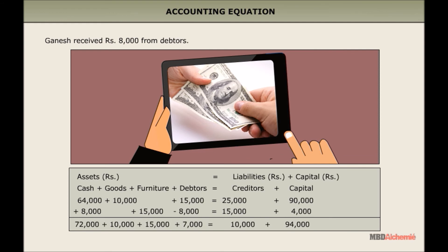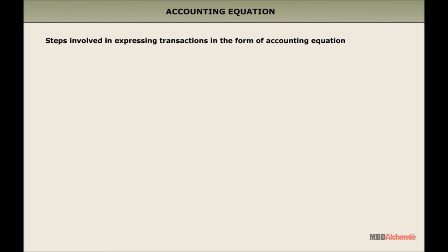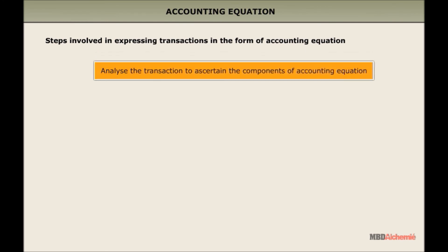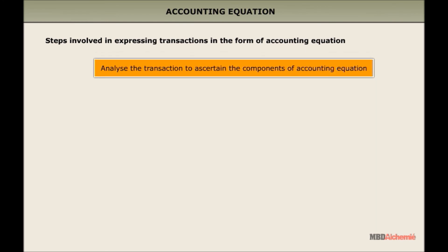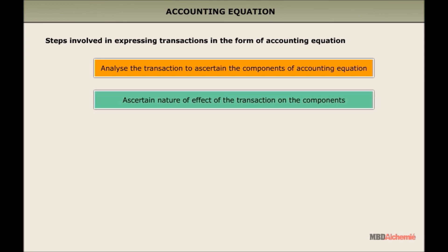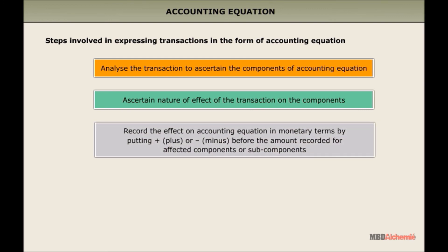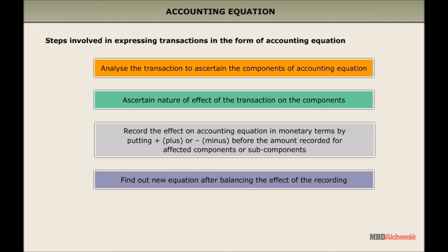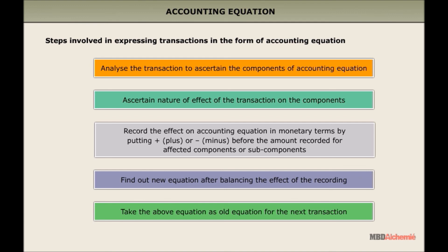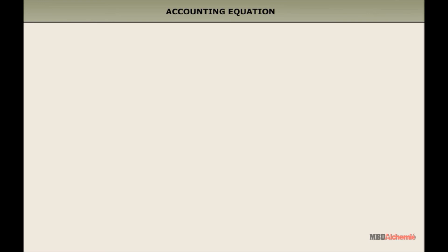In expressing transactions in the form of an accounting equation, the following steps are involved: First, analyze the transaction to ascertain the components of the accounting equation and determine the nature of effect on those components. Second, record the effect in monetary terms by putting plus or minus before the amount for affected components. Third, find out the new equation after balancing the effect and take that as the opening equation for the next transaction. From the viewpoint of the accounting equation, transactions may be put into two categories: transactions affecting only two accounts, and transactions affecting more than two accounts.